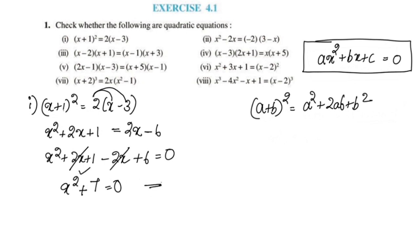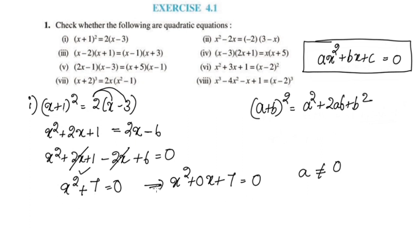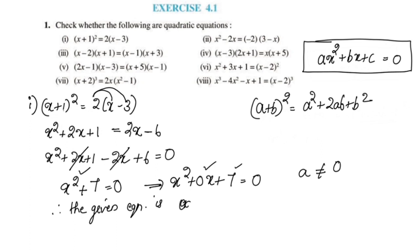Here the degree is 2. The equation x squared plus 7 is equal to 0, and it is a quadratic equation in the standard form. Therefore the given equation is a quadratic equation.